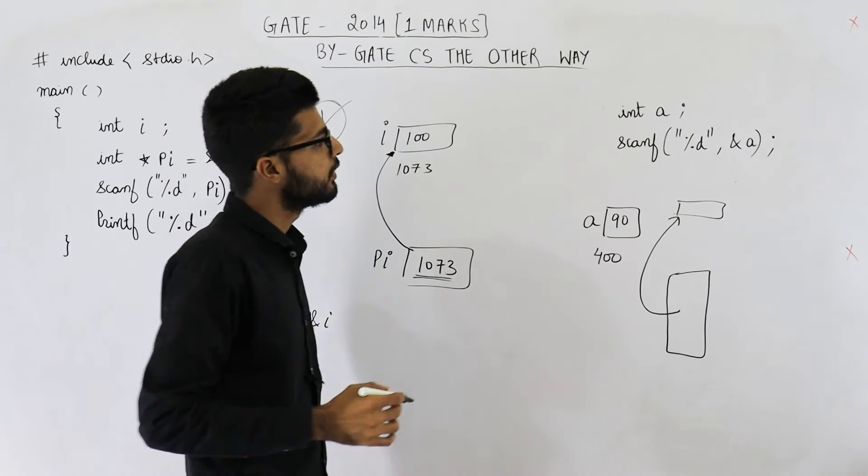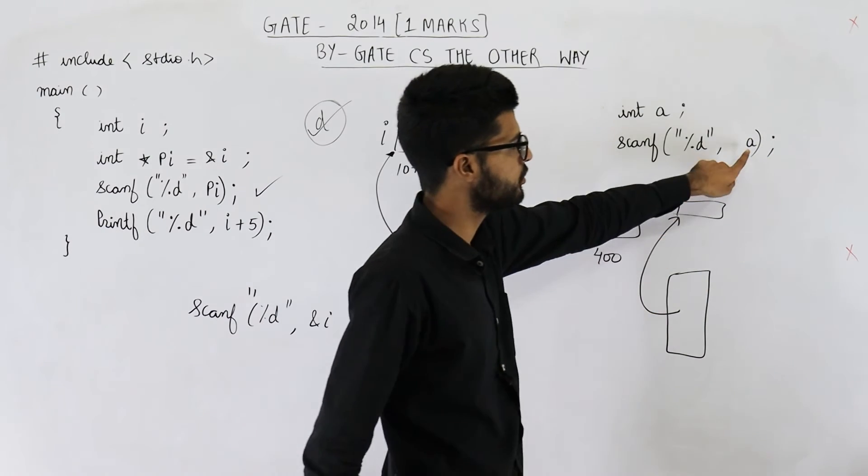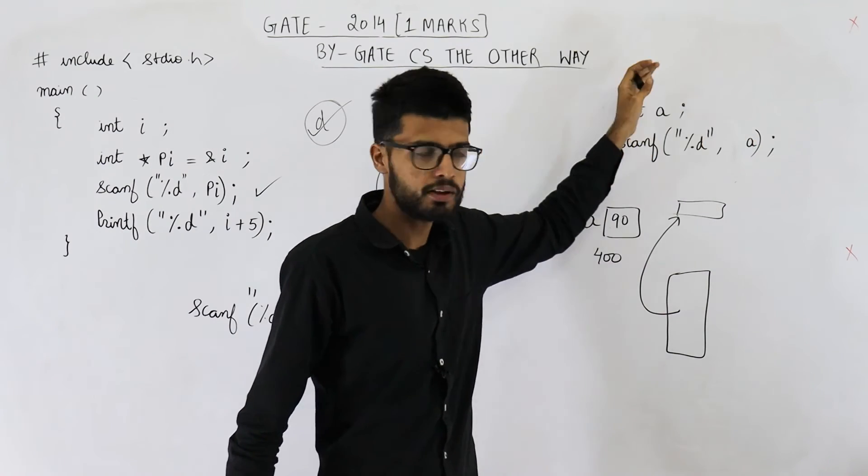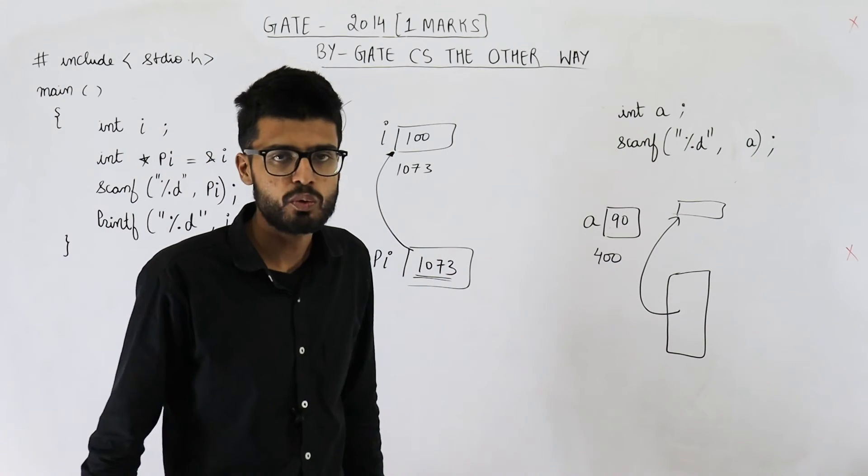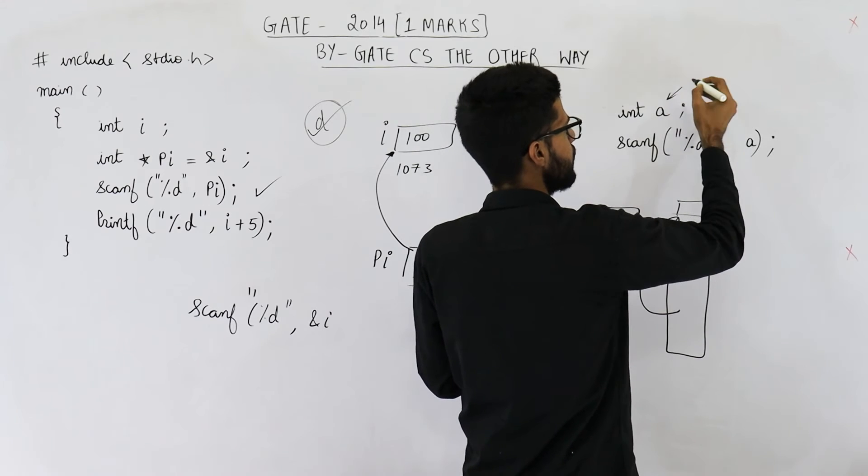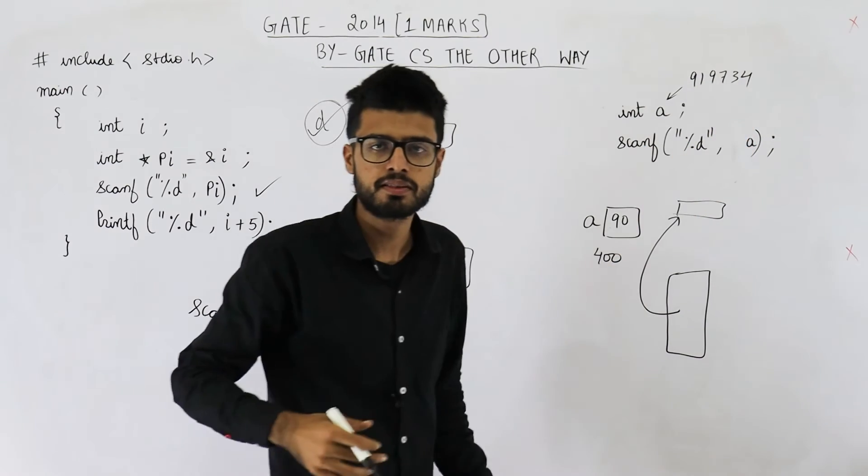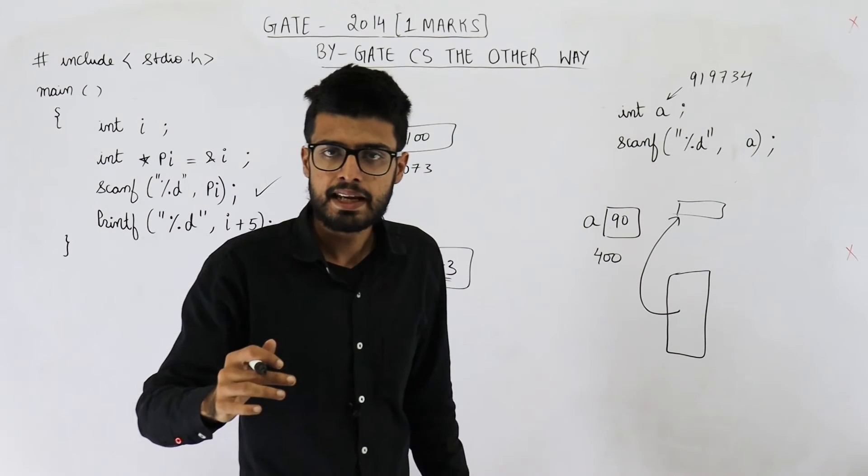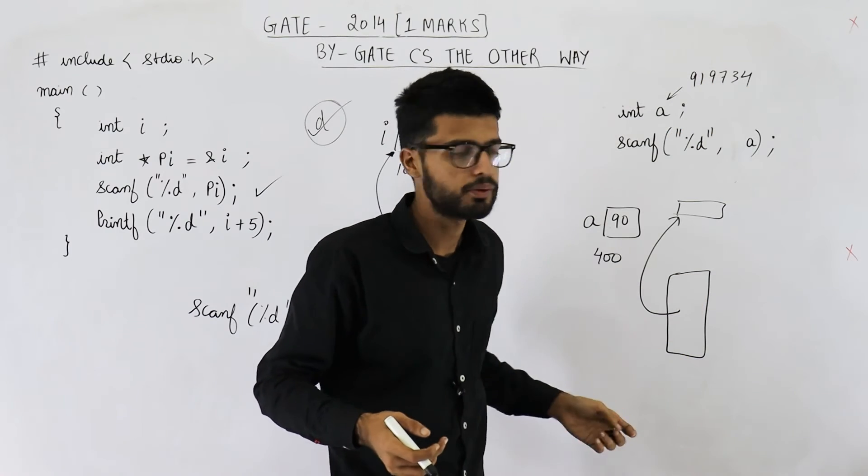One more thing. If you don't write & here, then what will happen? a is not a pointer, it's a normal integer variable. You have to write & here if you want this to work perfectly fine. But suppose you haven't written & operator, then what will happen? In that case, this a contains some random values. Suppose it is 919734. Suppose this value is contained in variable called A. Now you are passing this value to scanf. Scanf will treat this value as an address. Scanf will feel this address is passed.